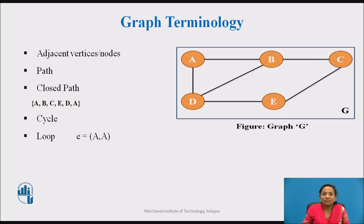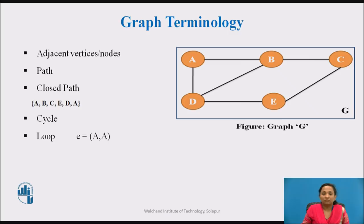Cycle: A path in which the first and last vertices are same. A cycle is a path of at least three vertices that starts and ends with the same vertex. A simple cycle has no repeated edges or vertices except the first and last vertices. A cycle is a closed path where we start and end at the same vertex; in the middle we do not travel to any vertex twice. A loop is a special case of a cycle in which a single arc begins and ends with the same node. An edge that has identical end points is called a loop.